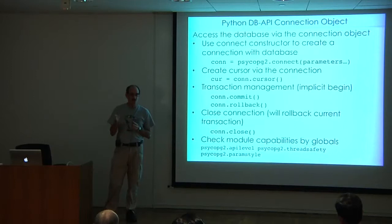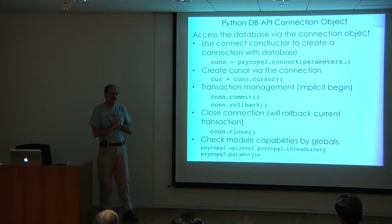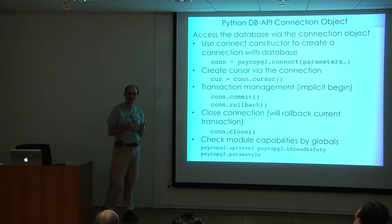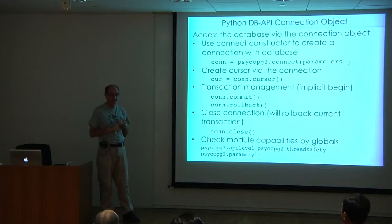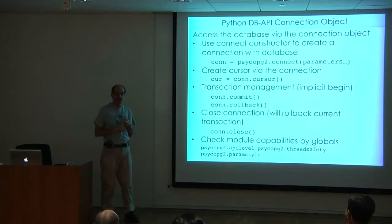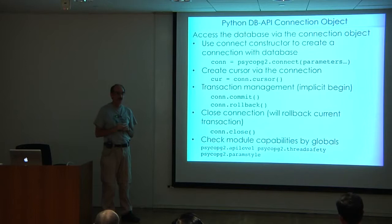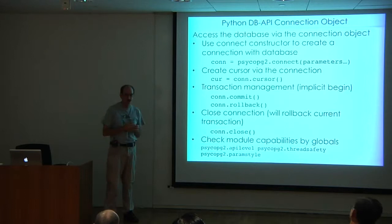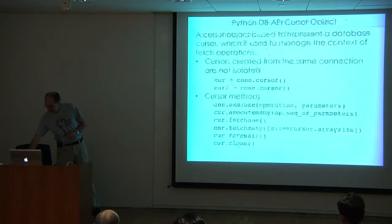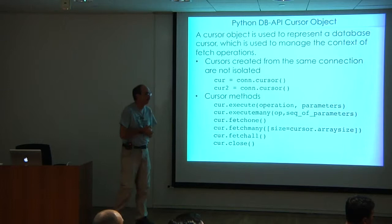You can also check the capabilities of the module — on the actual database adapter itself, not on the connection object. You can check the API level: most will say two, the old ones will say one. Thread safety is important — be really careful, not all database APIs are truly multi-thread safe. ORMs tend to protect you a little bit on that. And then there's the parameter style, which we'll talk about in a moment.